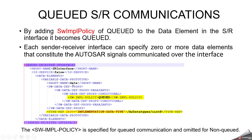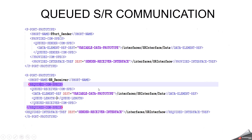For example, here I have declared the variable called data with the data type of unsigned integer 8. If you want to understand more about AutoSAR data types, you can watch the data type video available in our playlist. The software implementation policy will decide whether you are going to make a queued or non-queued sender receiver communication.